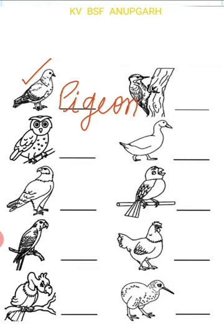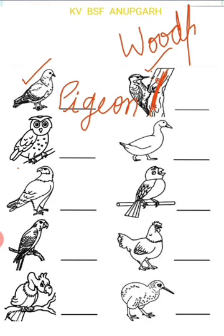I am sure next time you will write the correct spelling. Come on, next picture. Which bird is this? This is woodpecker — it pecks at the wood or stem of a tree. Woodpecker.